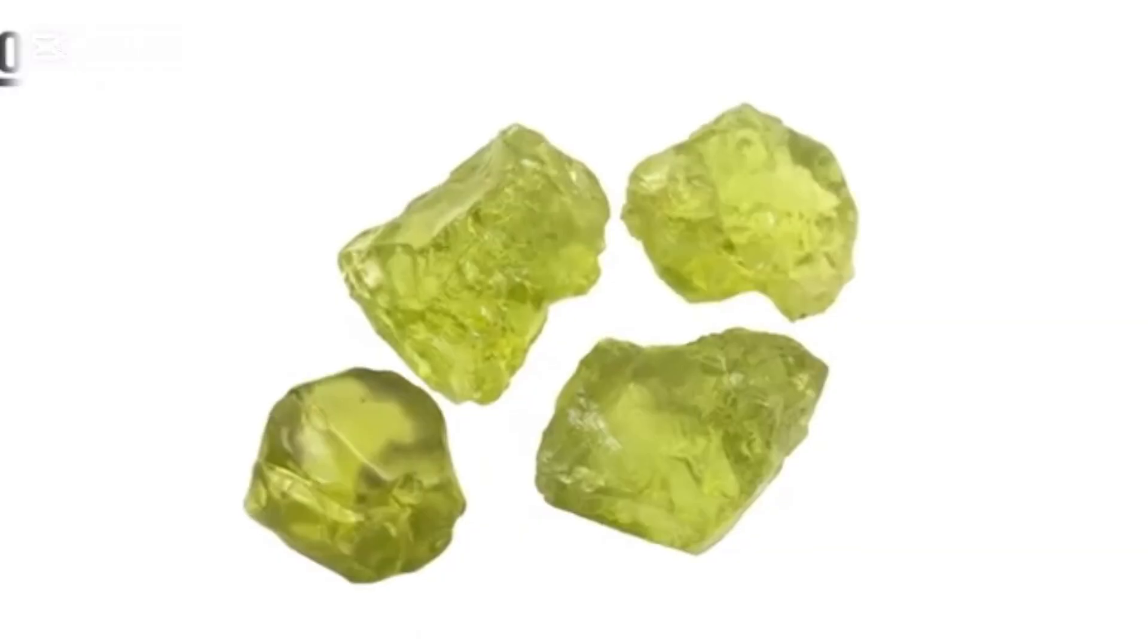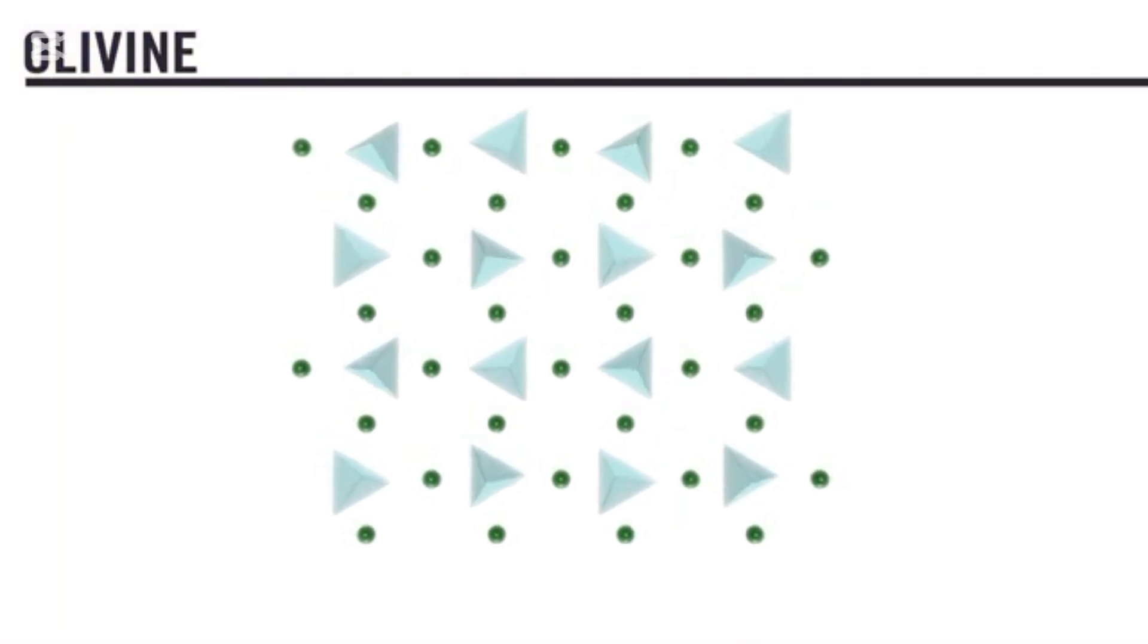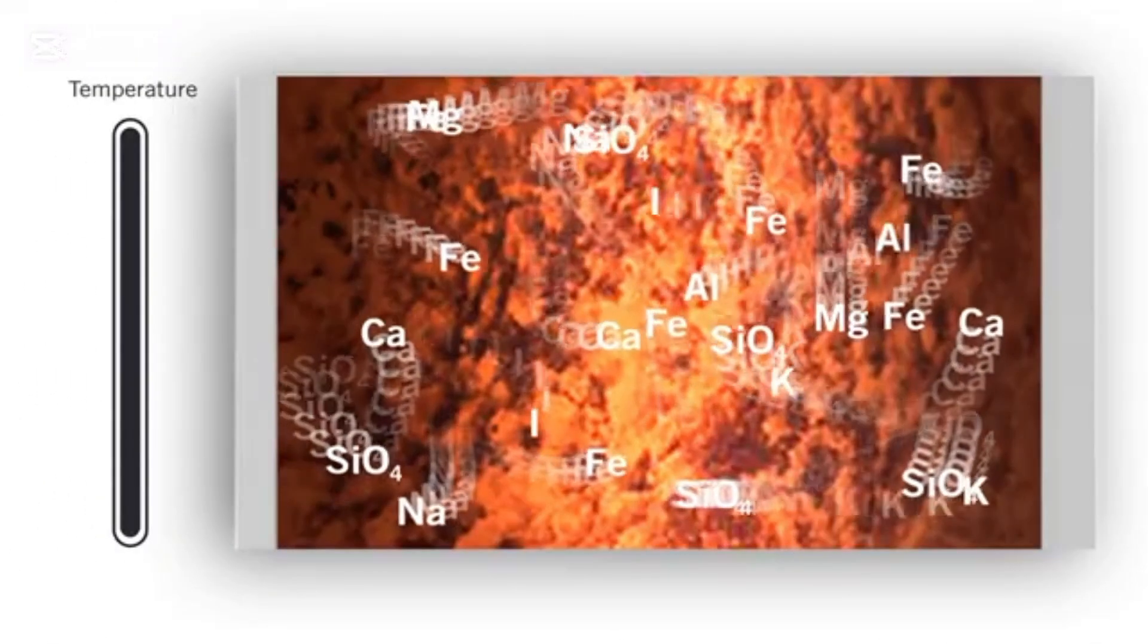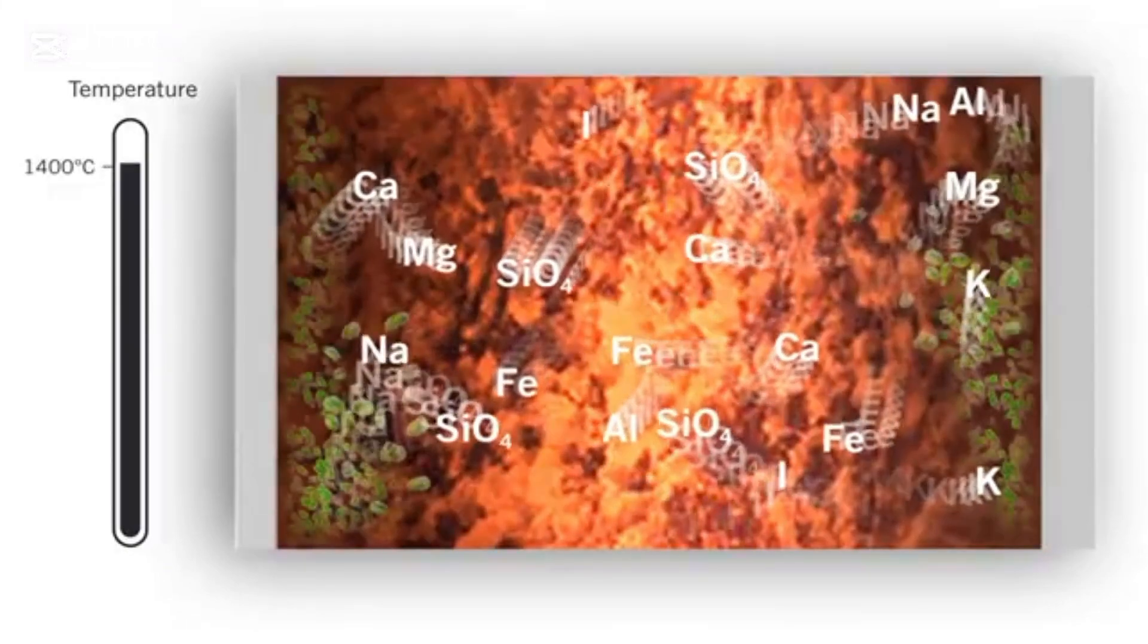The first mineral to form from the melt is olivine. Olivine is a very simple mineral to form. It contains iron, magnesium, and silica ions, which are isolated from each other. In other words, no oxygen atoms are shared between neighboring silica tetrahedra. Because olivine is rich in iron and magnesium, as it crystallizes, the melt becomes depleted in iron and magnesium.